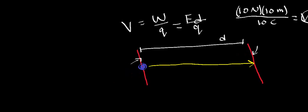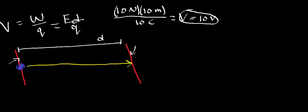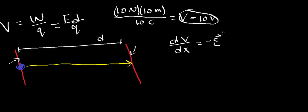Now, it turns out that if you have a voltage and you take the derivative with respect to some position — say x in one dimension — you actually get the negative of the electric field. So dV/dx gives you the negative of the electric field, or equivalently, the negative derivative of voltage with respect to position equals the electric field.